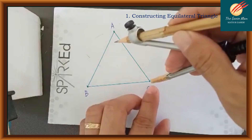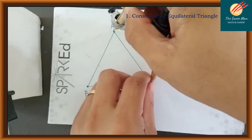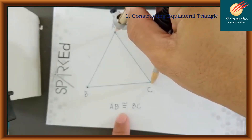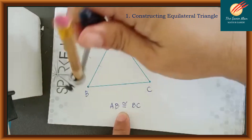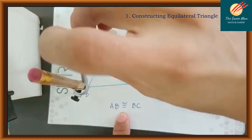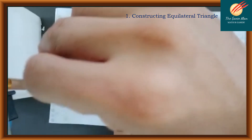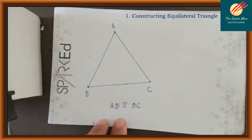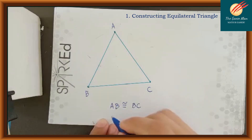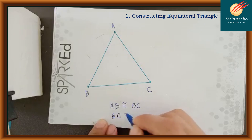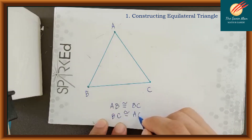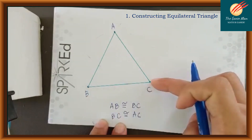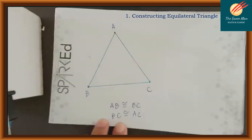Take note that AB is congruent to BC. To verify that, let's use the compass to measure from point A to point B. Observe that from point A to point B we have the same length. So truly AB is congruent to BC, and also BC is congruent to AC.